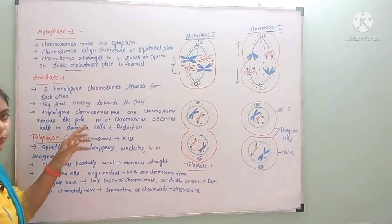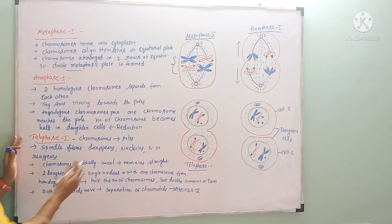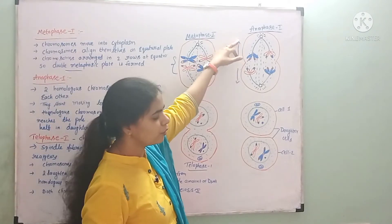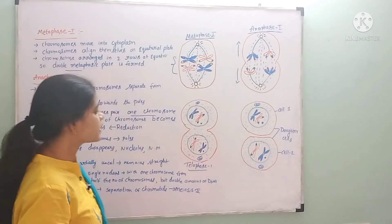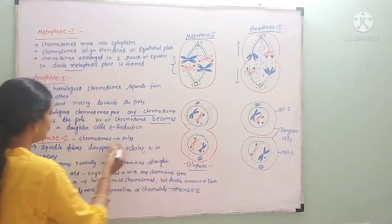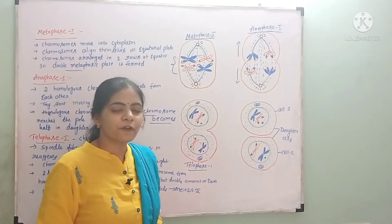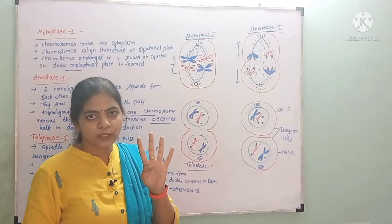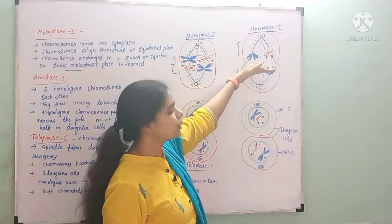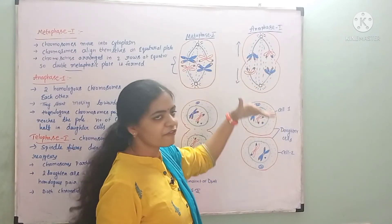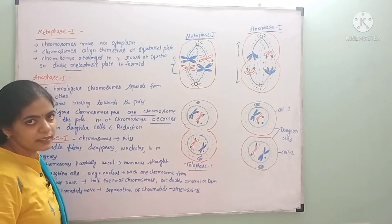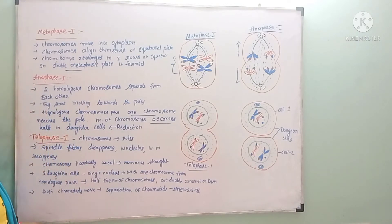The two homologous chromosomes separate from each other and move to opposite poles. One chromosome of the homologous pair reaches one pole and another chromosome moves to the opposite pole. So we end up with the same reduced number of chromosomes at each pole. Next is telophase 1.